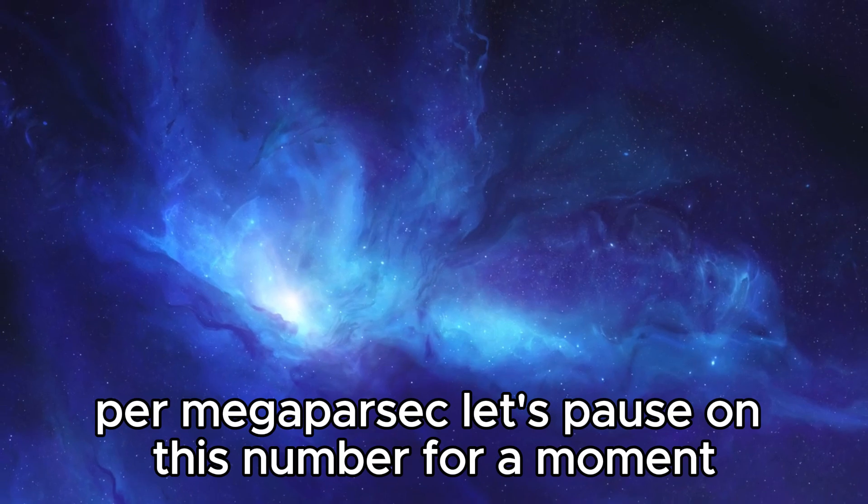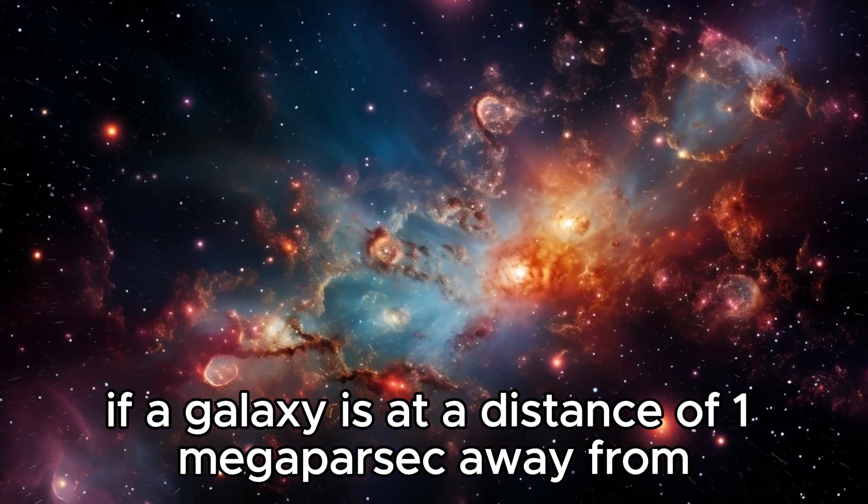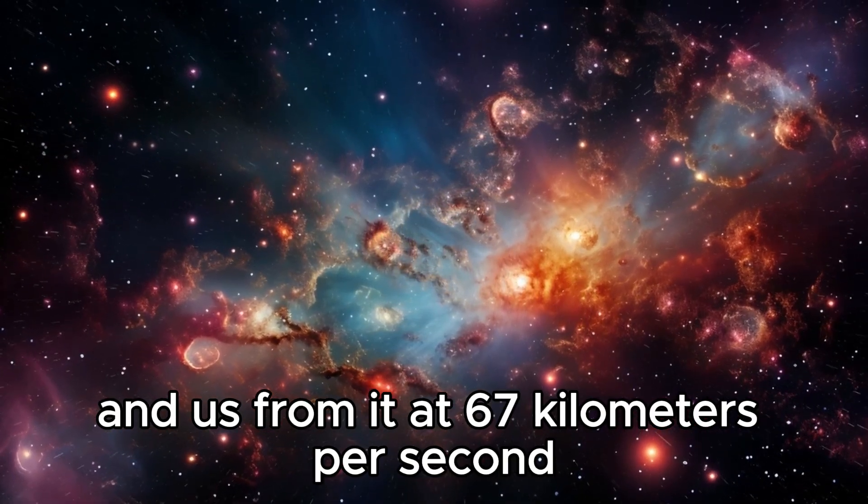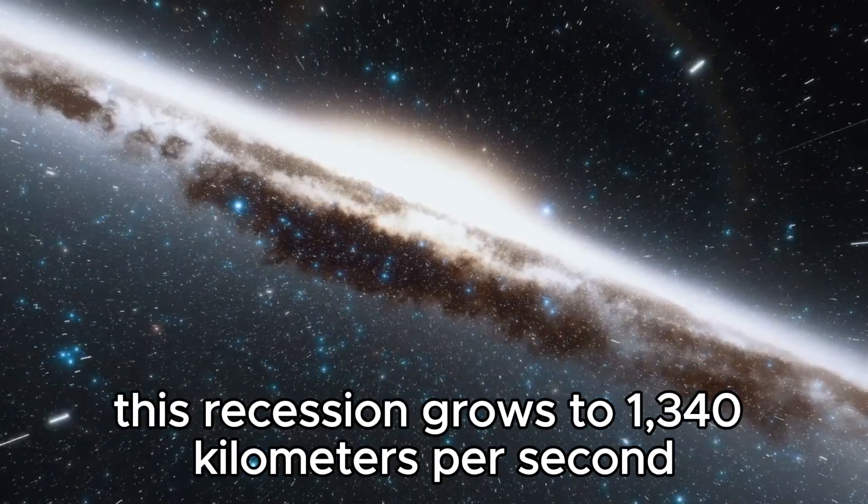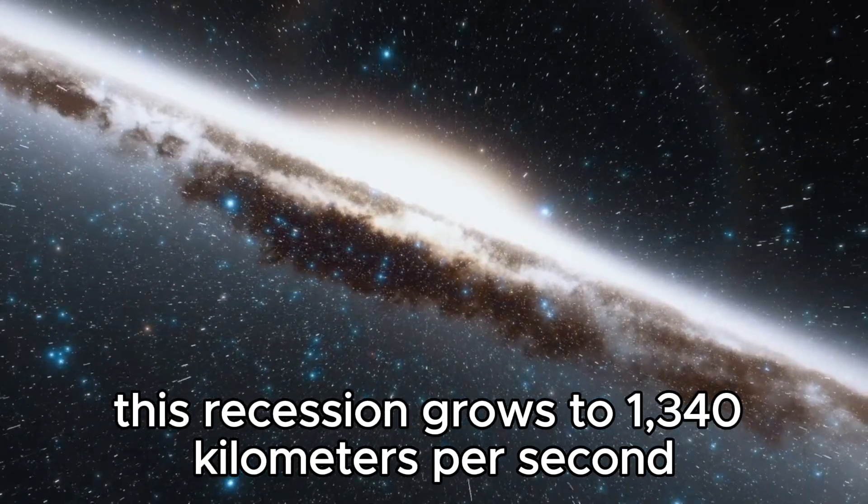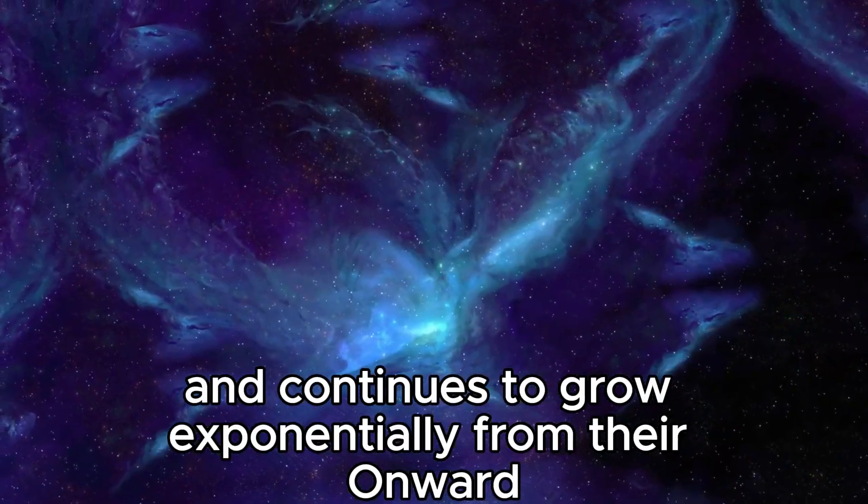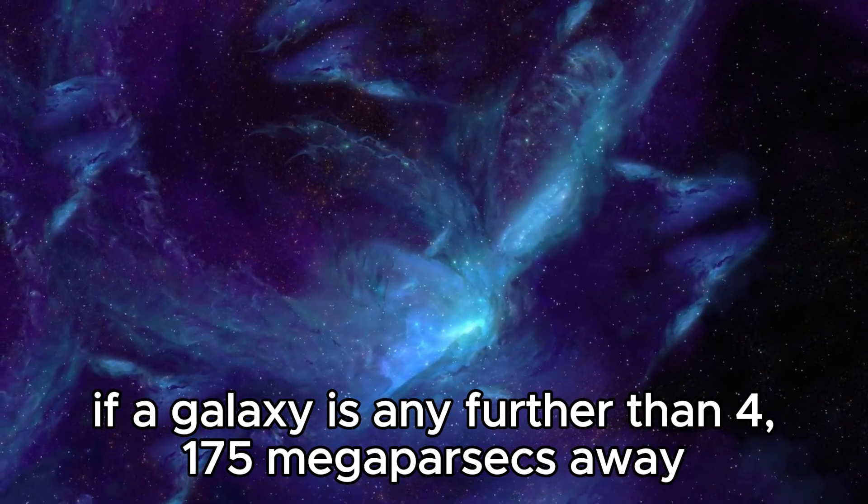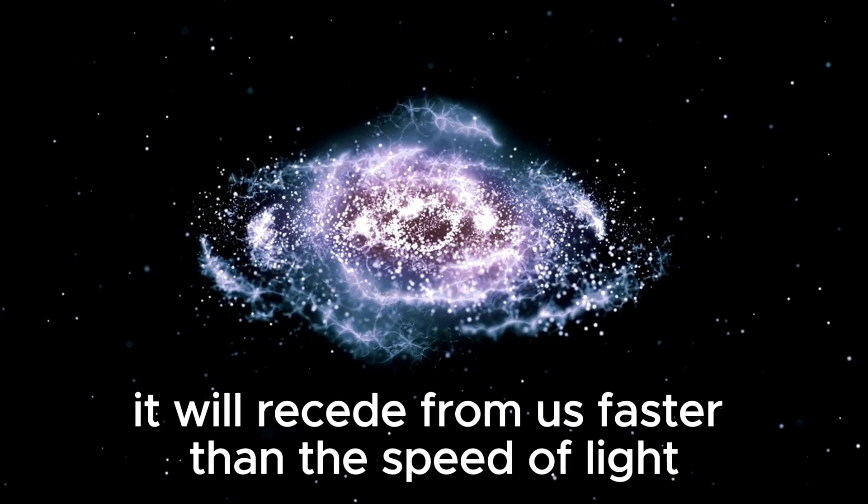Let's pause on this number for a moment. If a galaxy is at a distance of 1 megaparsec away from us, that means it will retreat from us and us from it at 67 km per second. At 20 megaparsecs, this recession grows to 1,340 km per second and continues to grow exponentially from there onward. If a galaxy is any further than 4,175 megaparsecs away, it will recede from us faster than the speed of light.